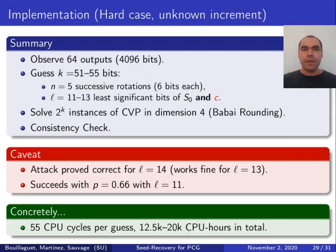So to summarize, in the hard case, we have to guess between 51 and 55 bits of internal states. We have to guess the first five rotations, which makes 30 bits, and we have to guess between 11 and 13 least significant bits of both the first initial state and the increment.